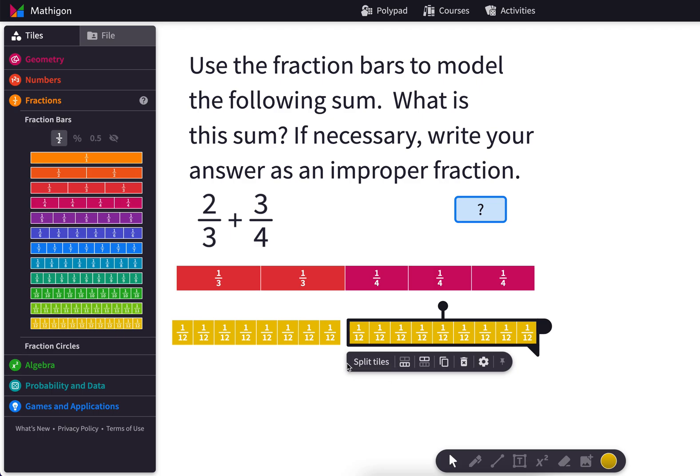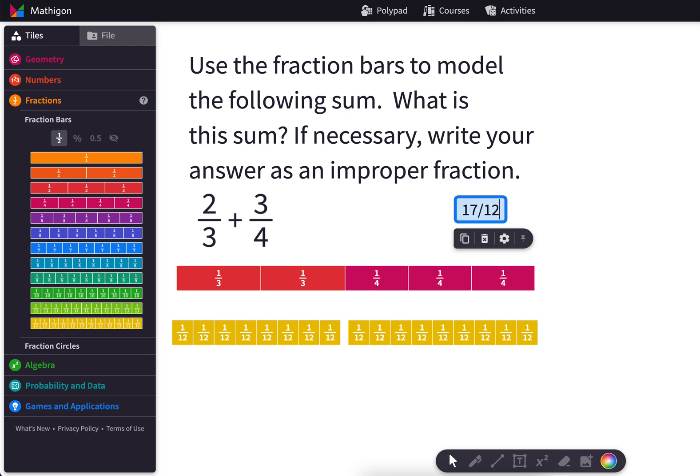And then what? We have nine twelfths here. So we have eight twelfths and nine twelfths. And the question is how many do we have? Well, I guess we have seventeen of those, right?